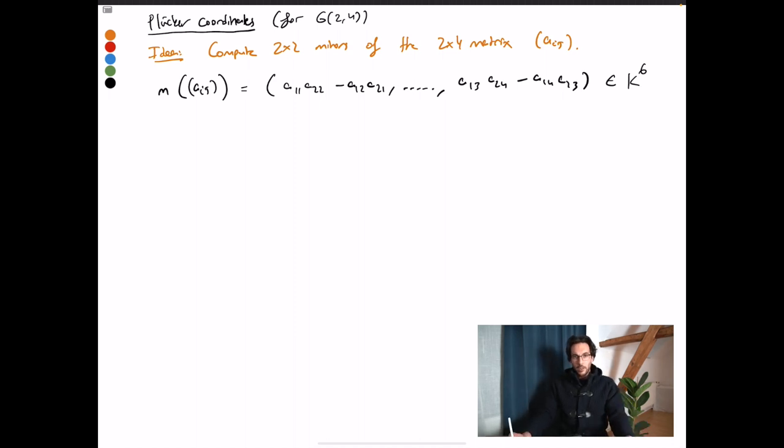Of course, the idea now has the following advantage. If I multiply this matrix on the left by a 2 by 2 matrix, then the minors change by the determinant of this 2 by 2 matrix. Let me write it down.